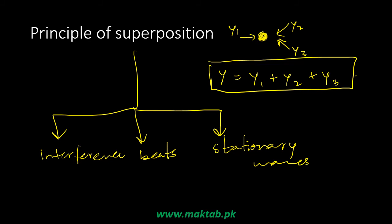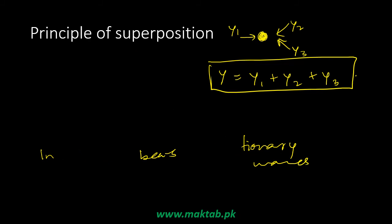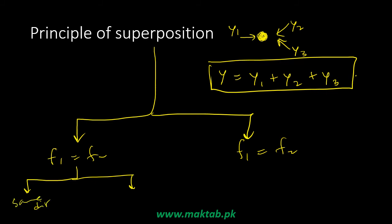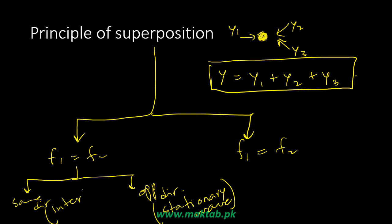When two waves are superposed, if two sources have equal frequencies F1 and F2, and the waves travel in opposite directions, we get stationary waves. If two coherent waves travel in the same direction, we get interference. If two waves have slightly different frequencies and travel in the same direction, we get beats.